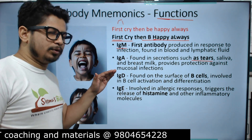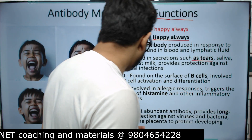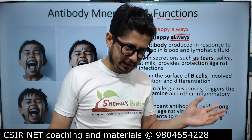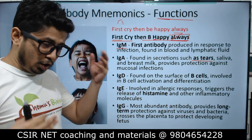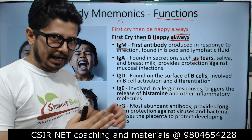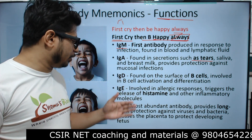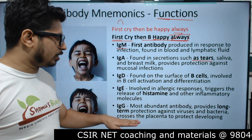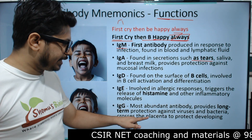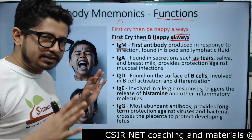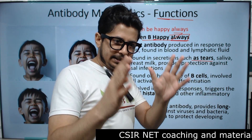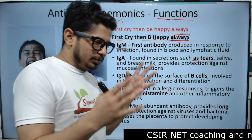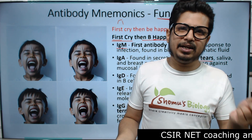The last in MAD EGG is G — IgG — and it corresponds to 'always.' IgG is the antibody that is present in the body always — it's always ready to go. It is produced as a secondary response, and once IgG is produced it provides long-term protection against viruses and bacteria. It also crosses the placenta to protect the developing fetus. That is the job of IgG: always there for long-term protection, and crosses the placenta.